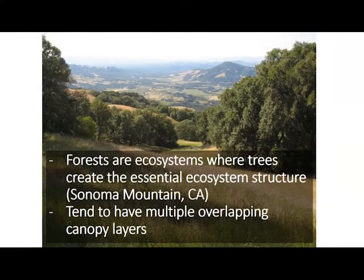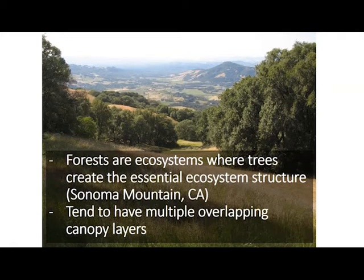You kind of know forests when you see them — they have this essential structure. This is a photograph from Sonoma Mountain, and I'm showing this for a couple of reasons. It's a good example of what we confront a lot of times in California, which is heterogeneity in ecosystems. What you're seeing in this photograph is some areas that each of you would recognize as being forest, but then a lot of other kinds of ecosystems that you would simply say are not forests — those are grasslands.